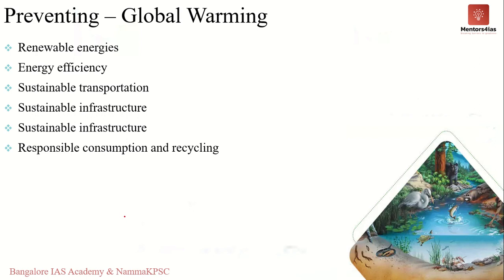Now we will briefly look at how we can prevent global warming. These are simple measures where each individual can play a role. The first is renewable energies — moving away from fossil fuels towards renewable and cleaner sources of energy. Reducing the combustion of fossil fuels will bring down greenhouse gas emissions, which are a major cause of global warming. It is important to consider renewable sources of energy rather than continuing to depend on fossil fuels.